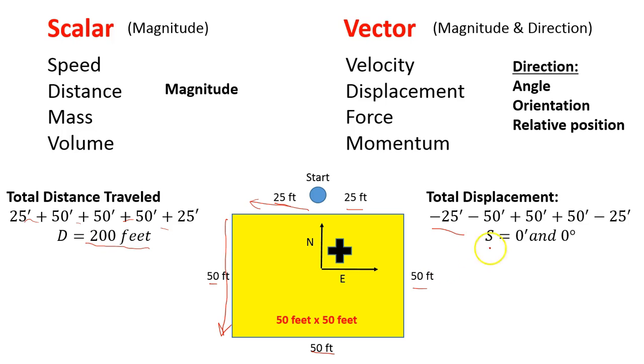So then 50 feet, this time they're going positive relative to our coordinate system, 50 feet positive again, and then 25 feet negative. So their total displacement was 0 feet and 0 degrees. So they didn't really travel, as far as displacement, anywhere. So their total displacement is 0.